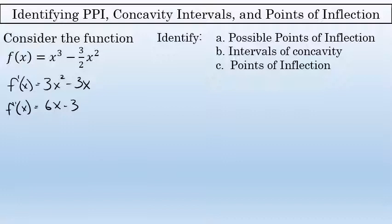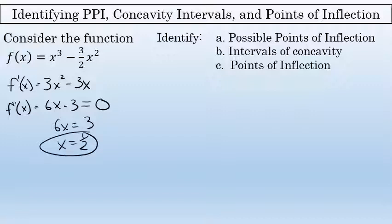The possible points of inflection would have x values where the second derivative is equal to 0. So I'm going to take that second derivative, 6x minus 3, solve for x, and I find that x is equal to 3 over 6, or 1 half. So x equals 1 half is the x coordinate of a possible point of inflection.